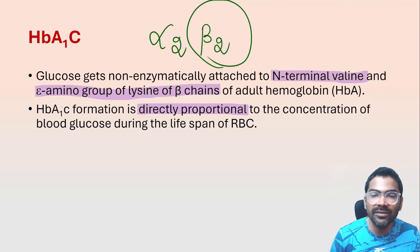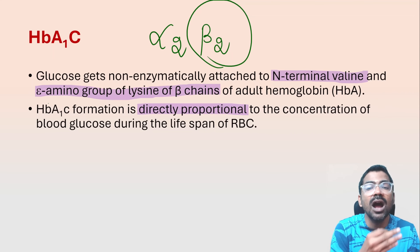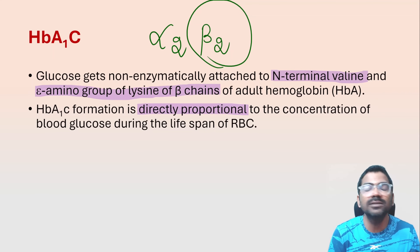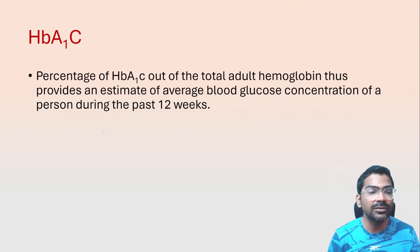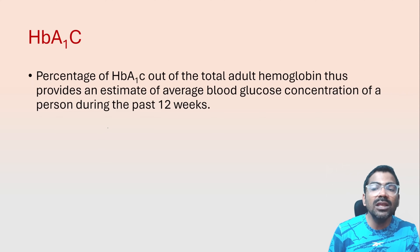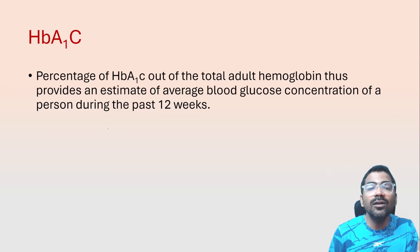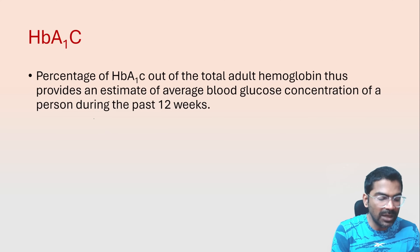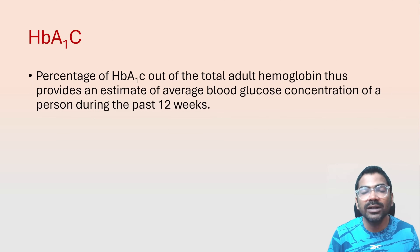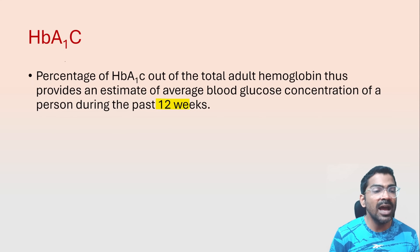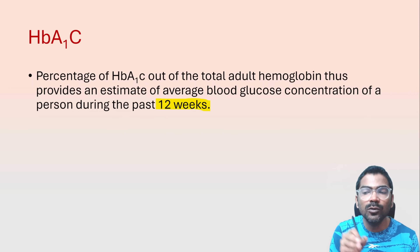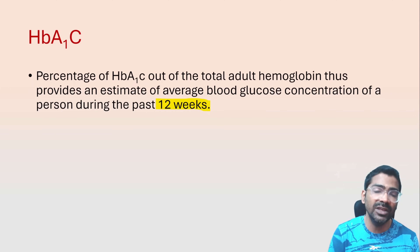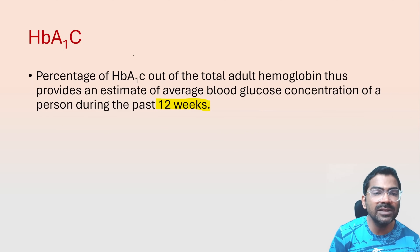HbA1c level is directly proportional to the concentration of blood glucose. If blood glucose is very high, HbA1c level will also be very high. So in patients with uncontrolled diabetes mellitus, HbA1c level will be very high. We can use HbA1c as a long-term indicator of blood glucose level in patients of diabetes mellitus, as it reflects the average blood glucose concentration over a period of 12 weeks.